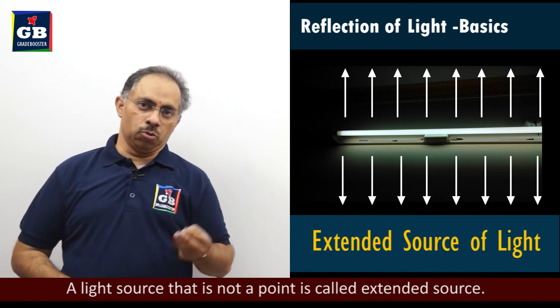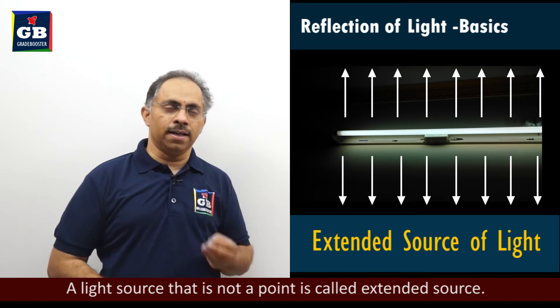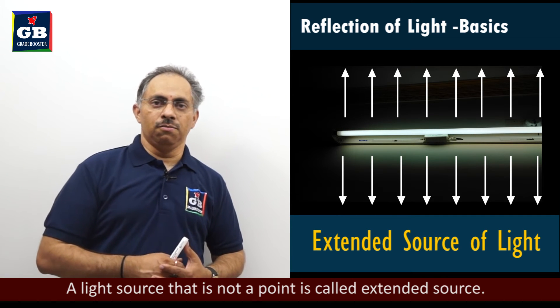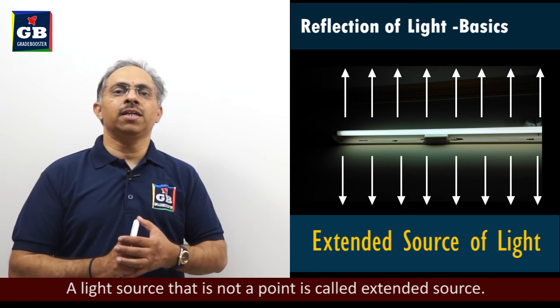Other than a pointed source of light, like in a candle, other than a candle, we can take the example of this tube light or any other such source. We will call them as extended source of light. It is not a point source.